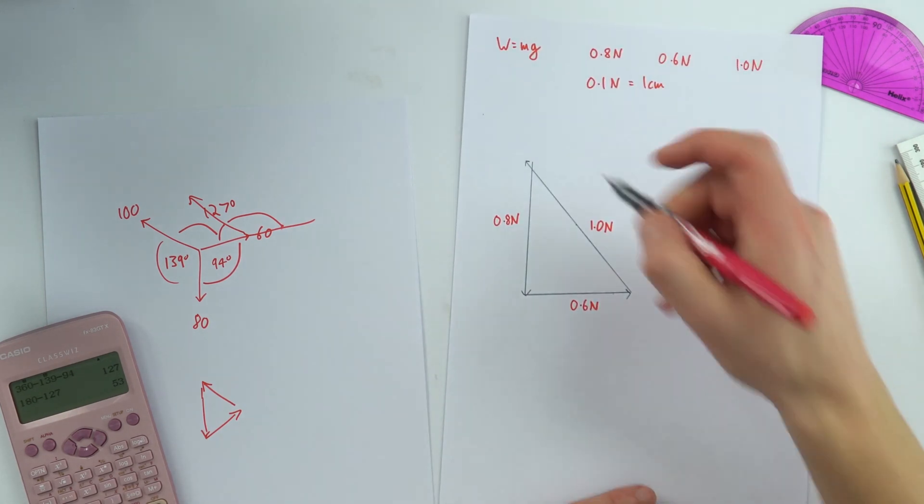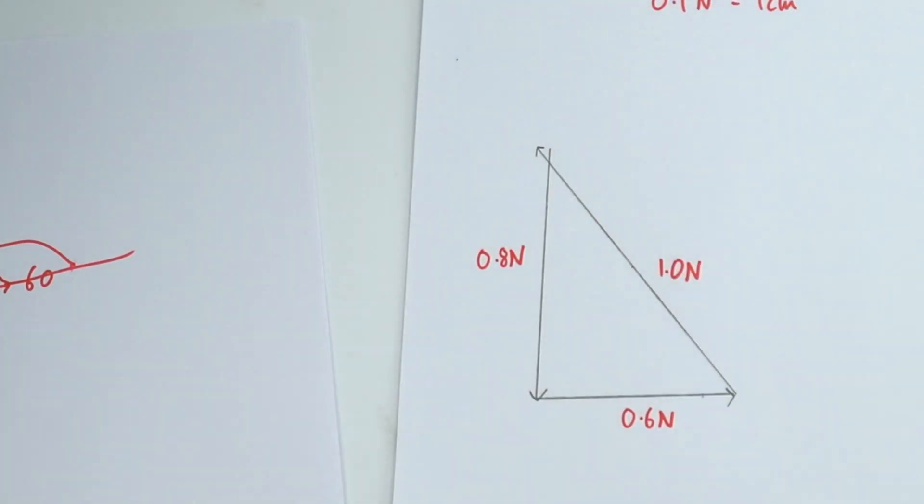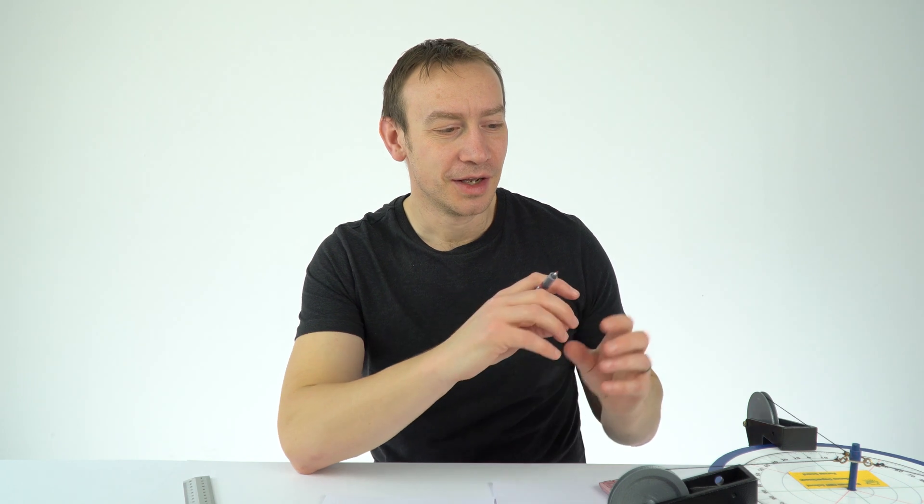What we have is a triangle that almost gets back to the starting point because when you've got three vectors, if you were to join them end to end they should end up at the start point. To be honest I think going from here to here is quite close bearing in mind there's going to be quite a lot of uncertainty both in actually making sure that it is in equilibrium.